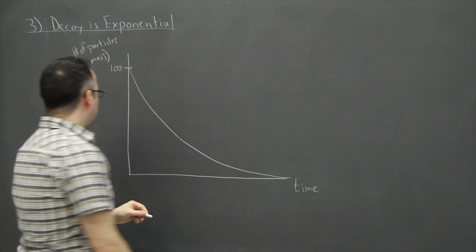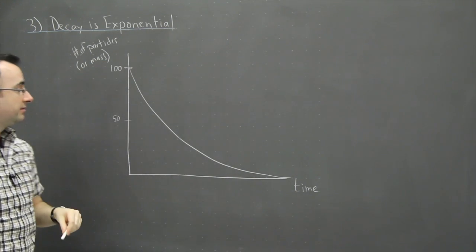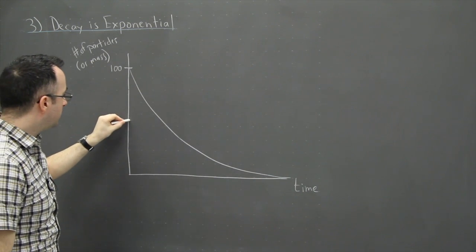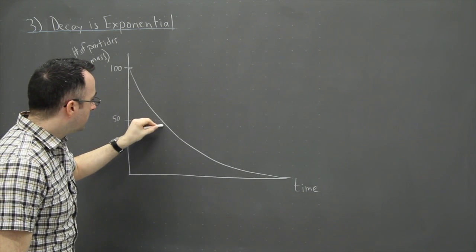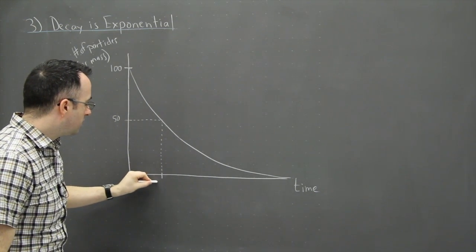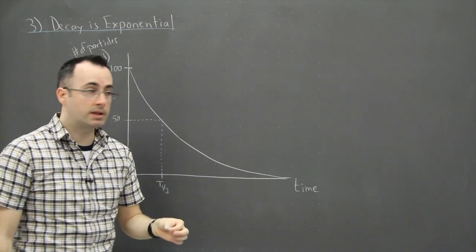But at some point in time then, there's going to be exactly half of the number of particles there originally were. So if that's the case, then I can make a little dotted line over here. Take a little dotted line. This is a special time. We actually call this t one-half. That's an important thing here.